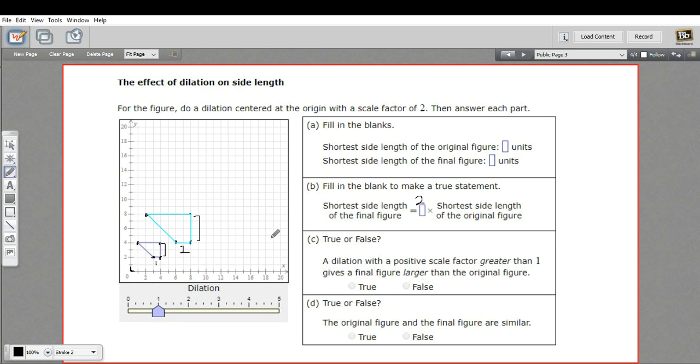The next one says: a dilation with a positive scale factor greater than one gives a final figure larger than the original figure. And that is true. All of these dilations from one on up are going to give a larger figure. The dilations with scale factors between zero and one are going to give a smaller figure than the original.